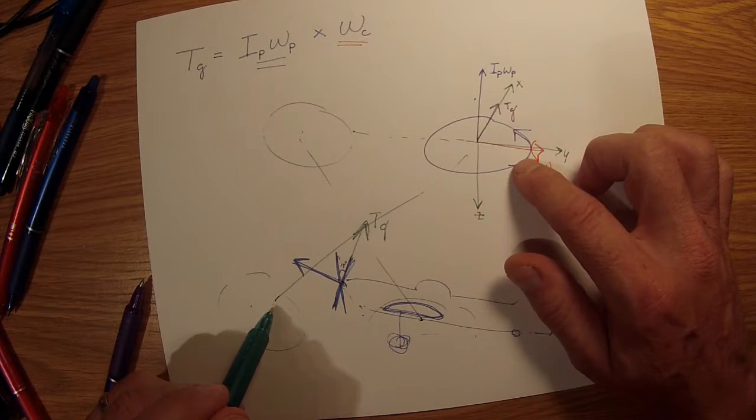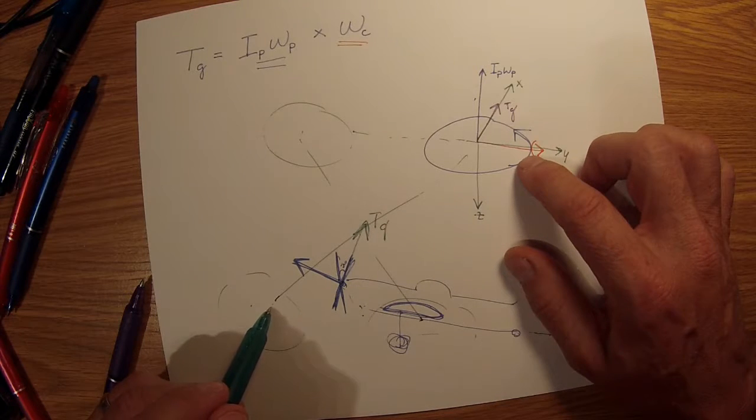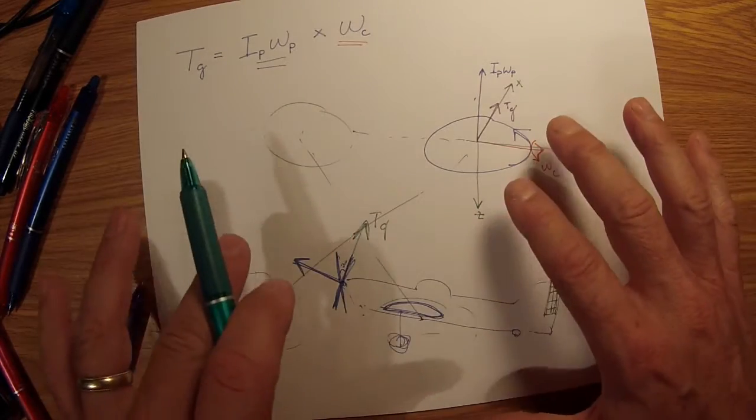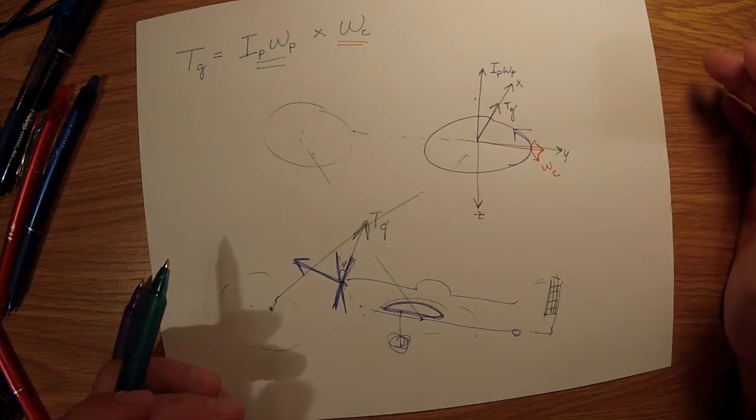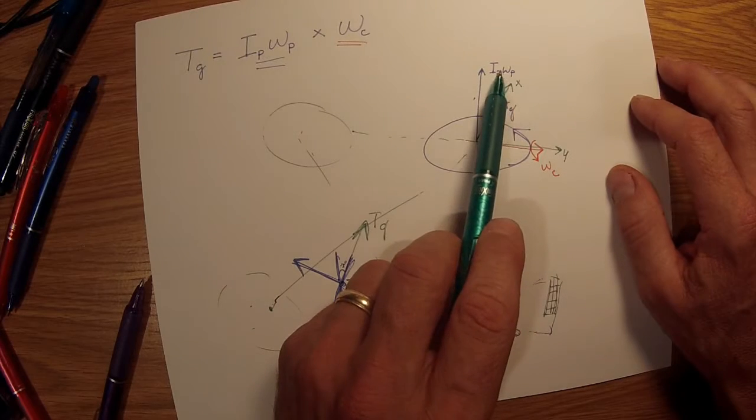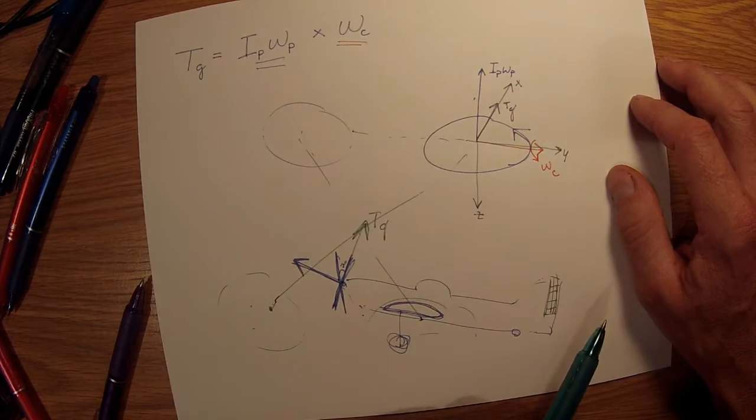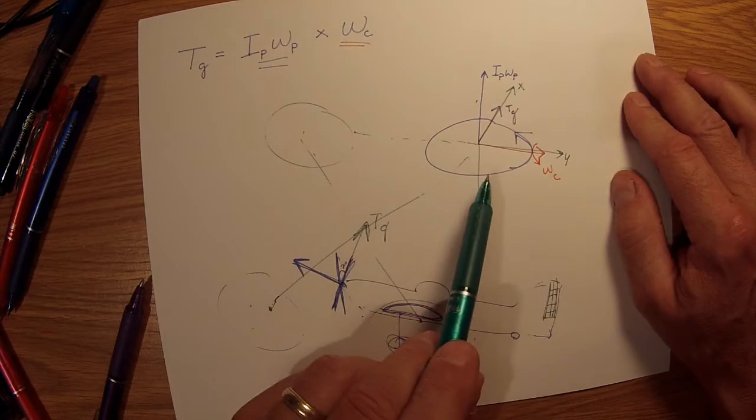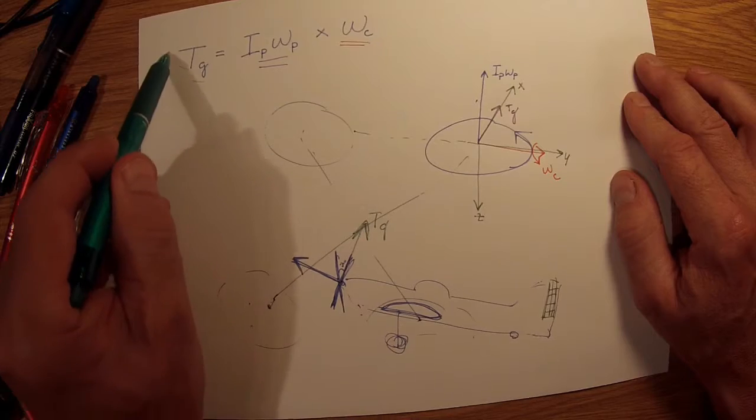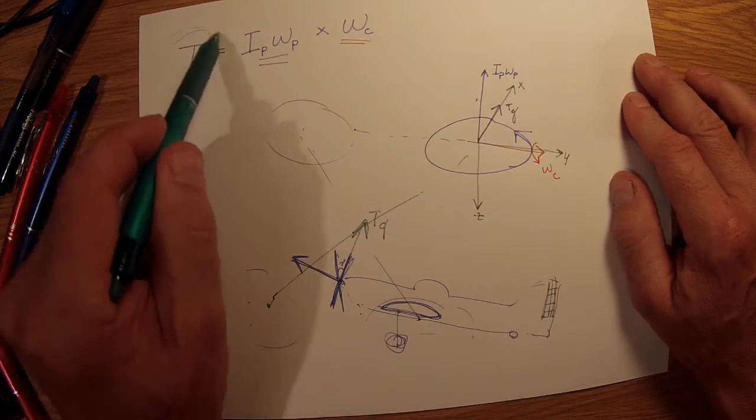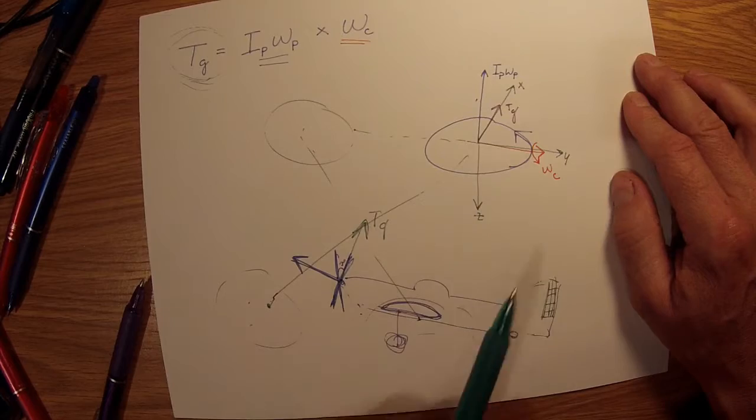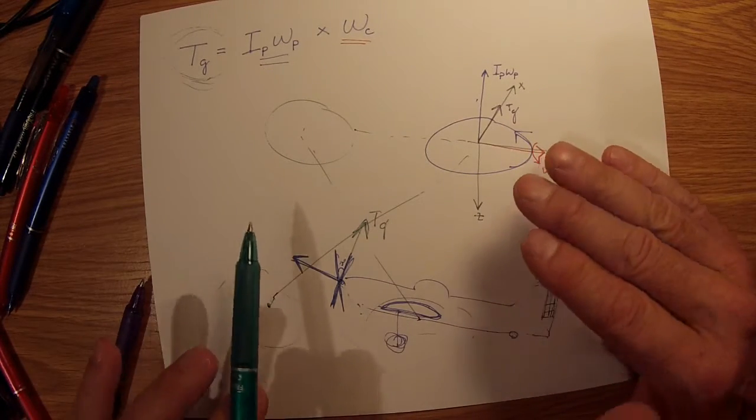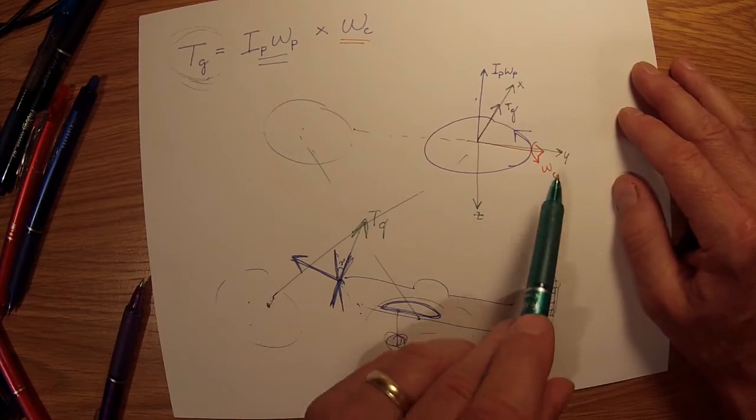Each one of them contributes this gyroscopic effect to the sum of torques on the body of the quadrotor. It may end up being minimal given the moment of inertia of the propellers, but we're going to model it, and this is how we derive what those gyroscopic torques are due to the propeller's rotation and a change in rotational plane at a rate Omega C.